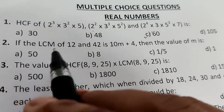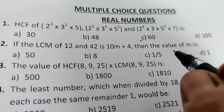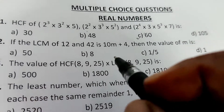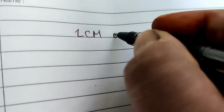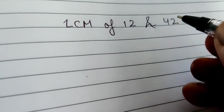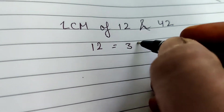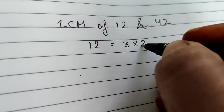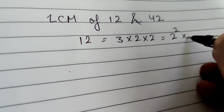Question 2: If the LCM of 12 and 42 is 10m + 4, what is the value of m? Options are 58, 1/5, or 1. We first find the LCM. Prime factorization of 12 gives 2² × 3.